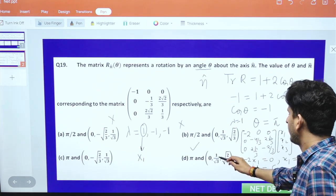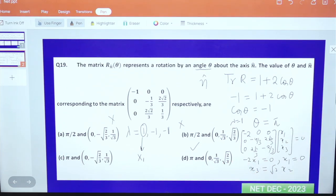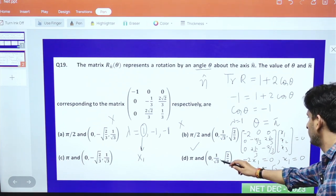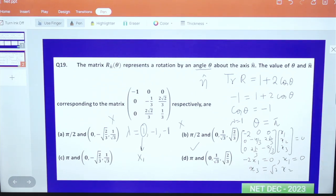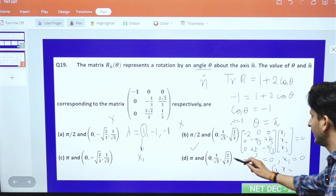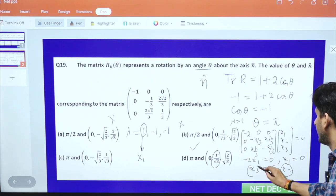The square root of 1/3 plus 2/3 equals 1, confirming it's a unit vector. Because of this condition, if x2 is 1 by root 3, then x3 becomes root 2 by root 3.